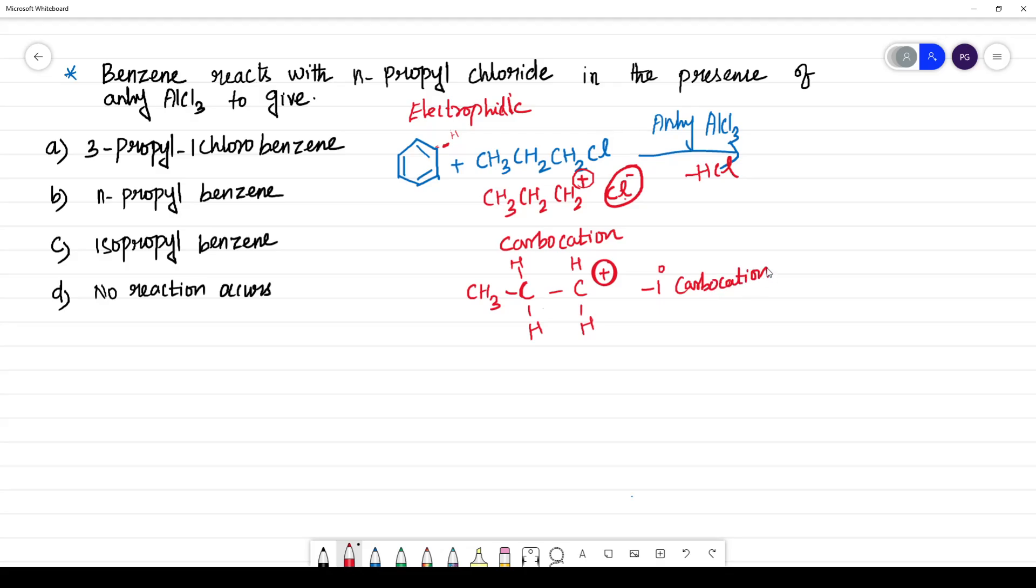What happens here? In the case of primary carbocation, there will be hydride shift. So what is hydride shift means? H minus, H minus is hydride. Hydride is shifted. So this H minus will go where? It will be going to this plus charge.